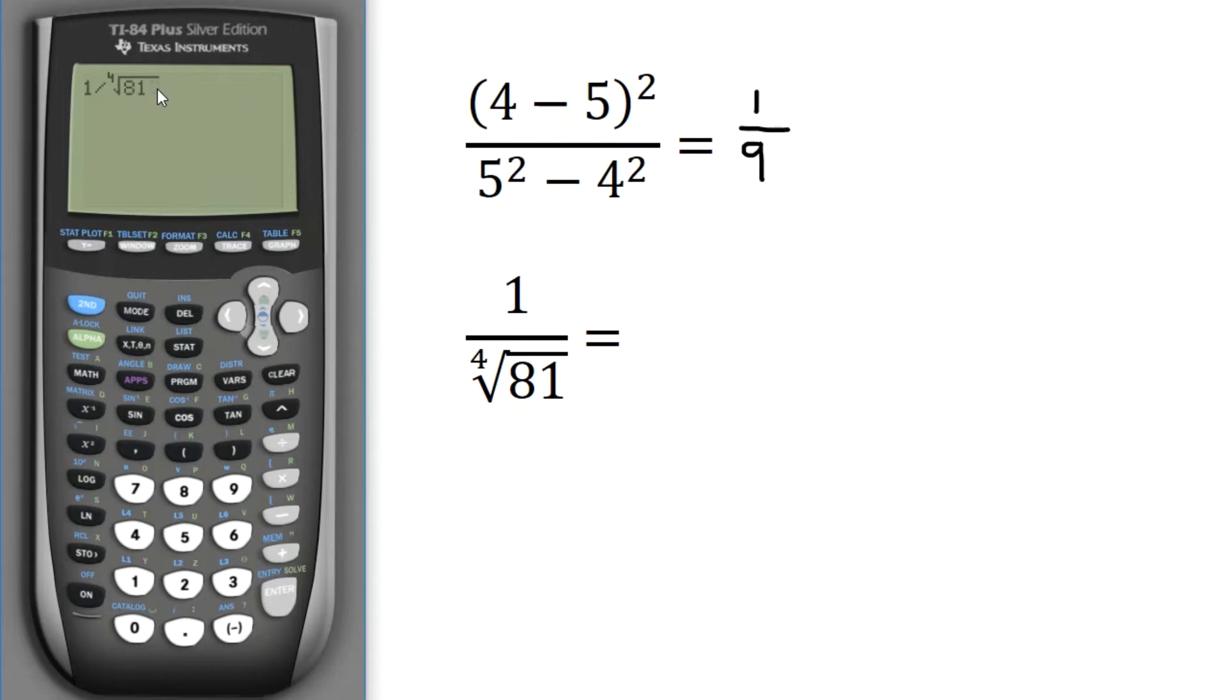Now notice how my cursor is still underneath the square root. I'm going to hit this forward button to get out of that, and I want the output as a fraction, and that gives me 1 third.